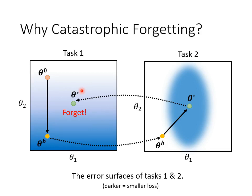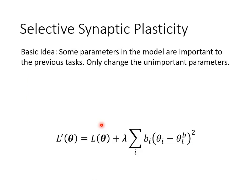How to solve this forgetting problem? For Task 2, there may be many different sets of parameters that give a low loss. Instead of moving θB upper right, if we move it left and stay within the blue oval, the new parameters can avoid forgetting Task 1. The key idea is that every parameter has different importance for previously learned tasks. We hope that when learning new tasks, the important old parameters won't change much, while new tasks only modify the unimportant ones.